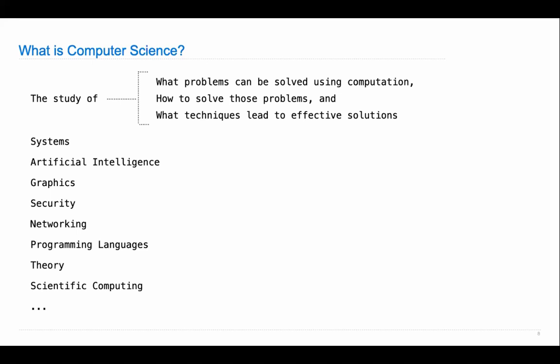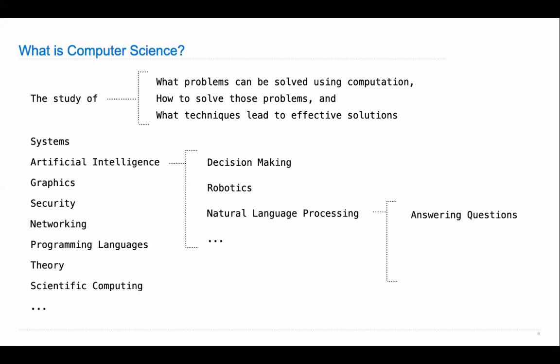Within each of these, there are sub-fields. Most people who work on artificial intelligence work on something particular, like decision making — the best chess player in the world is now a computer, best Go player, best Jeopardy player — or robotics, or natural language processing. That's what I work on: getting computers to do useful things with text. I mostly work on a sub-sub-sub-field — machine translation specifically — and we need to introduce you to all of this.